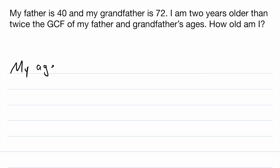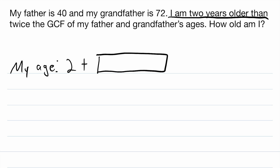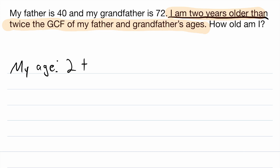This is my age. We start off with: I am two years older than, so we can write two plus something. Whatever it is, I'm two years older than that. So what am I two years older than? I'm two years older than twice the greatest common factor of my father and grandfather's ages. Twice means two times, and then we have the greatest common factor of 40 and 72.